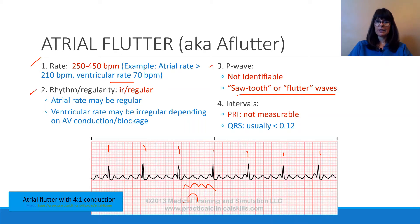The P waves are not really identifiable in the classic sense because they have this sawtooth or flutter wave appearance instead of the surrounded P wave shape. Therefore we can't really measure the PR interval, because there are way too many P waves to identify a clear PRI.